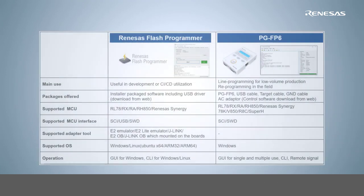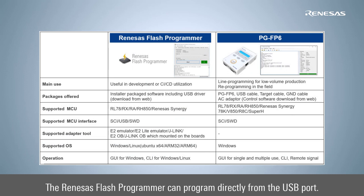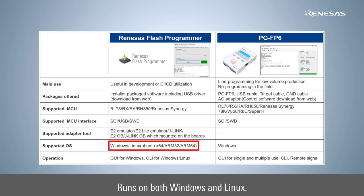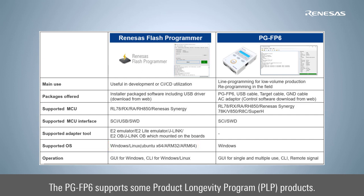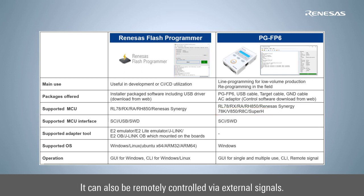The Renesas Flash Programmer allows programming directly from the USB port and is also compatible with Linux and Windows. The PGFP6 supports 78K, V850, R8C, and Super H microcontroller families. It can also be remotely controlled using external signals.